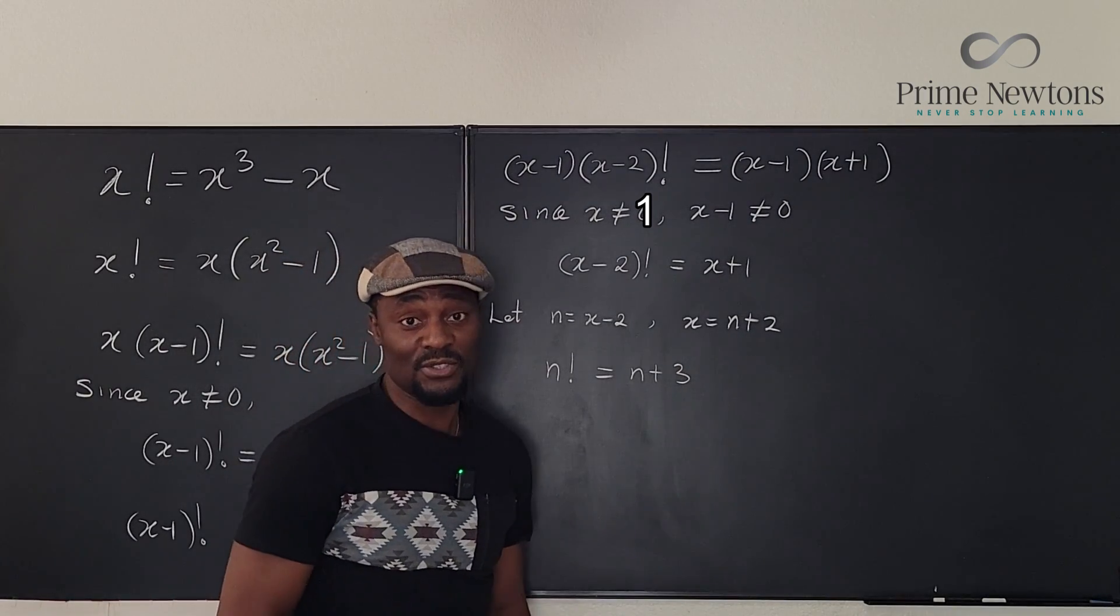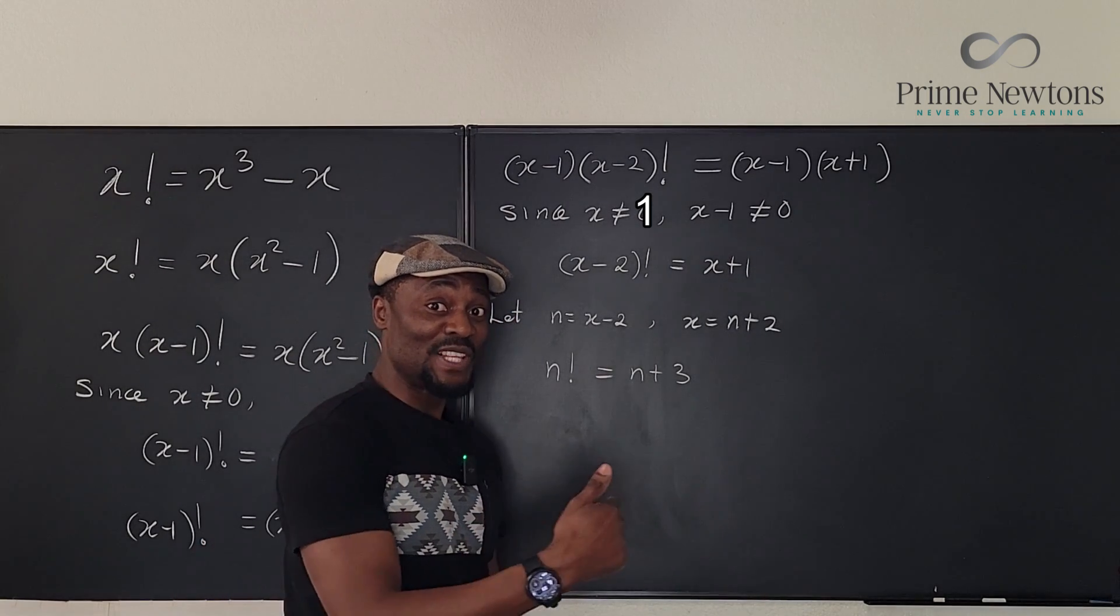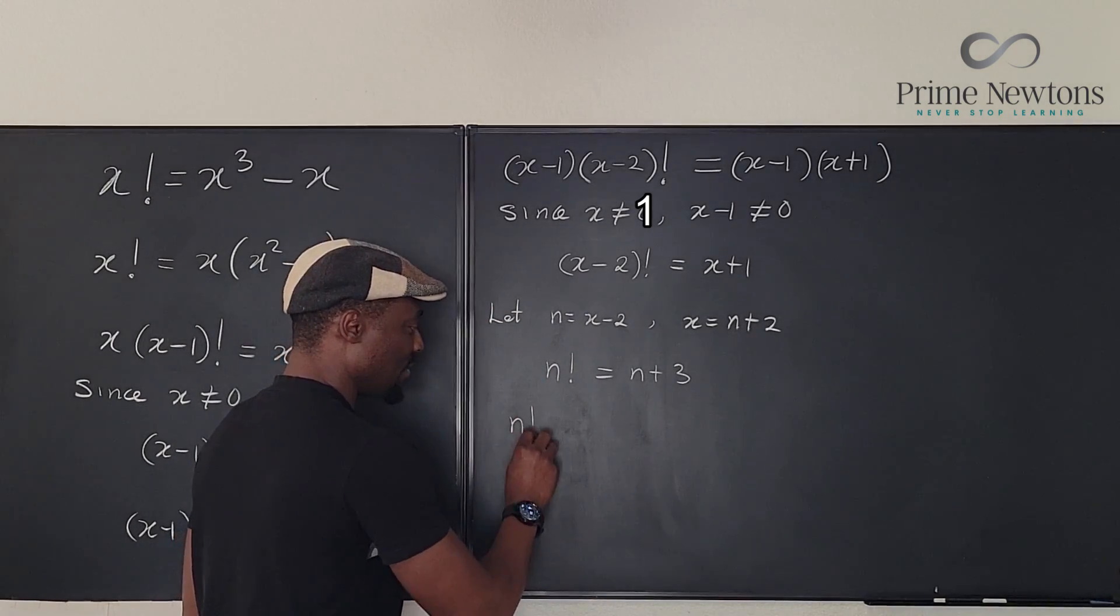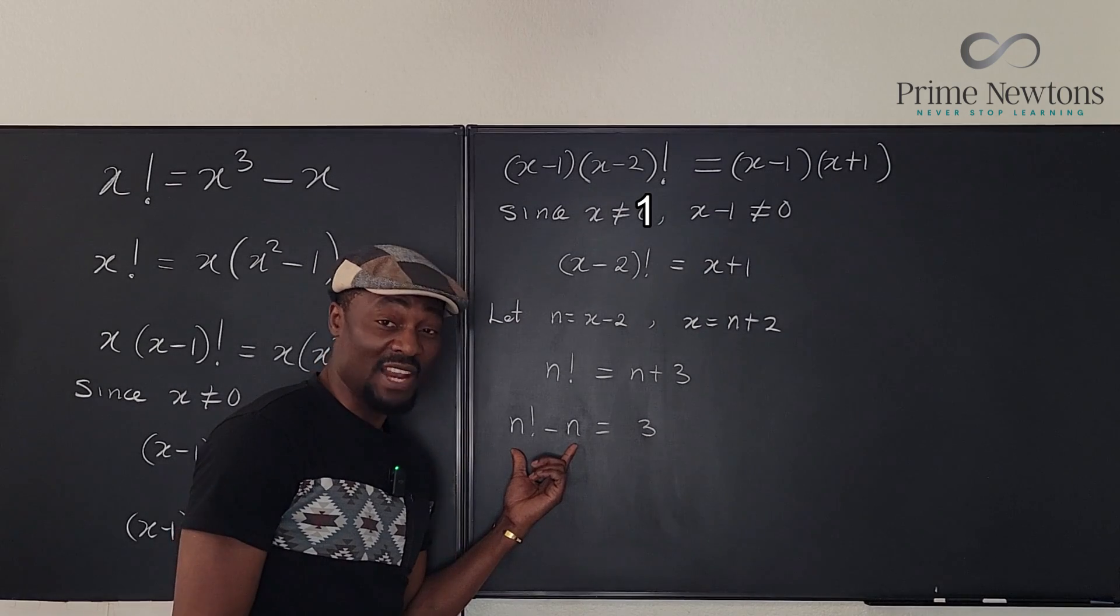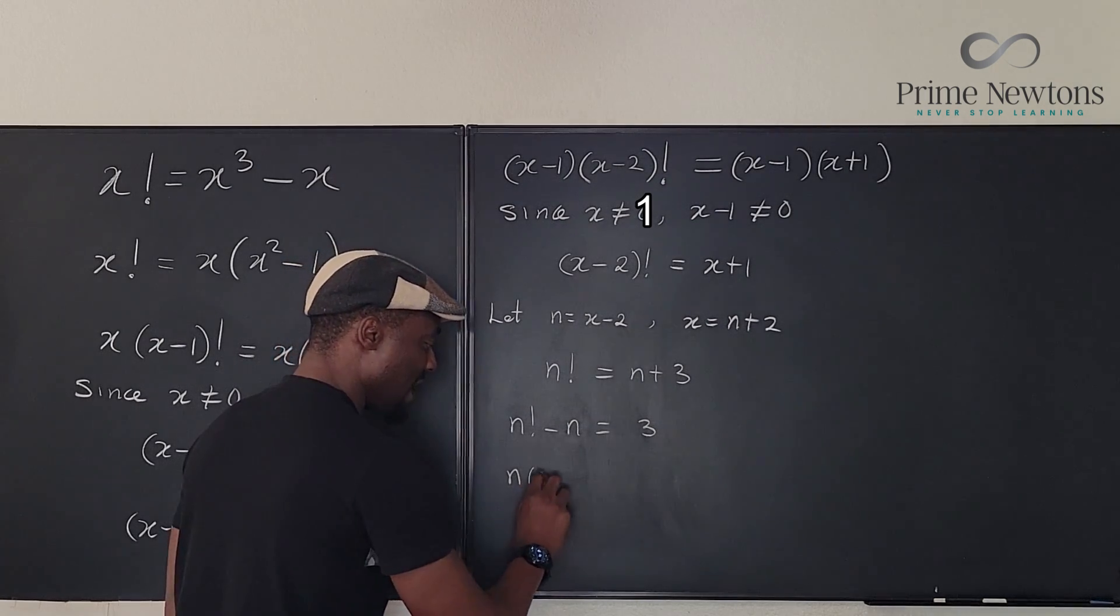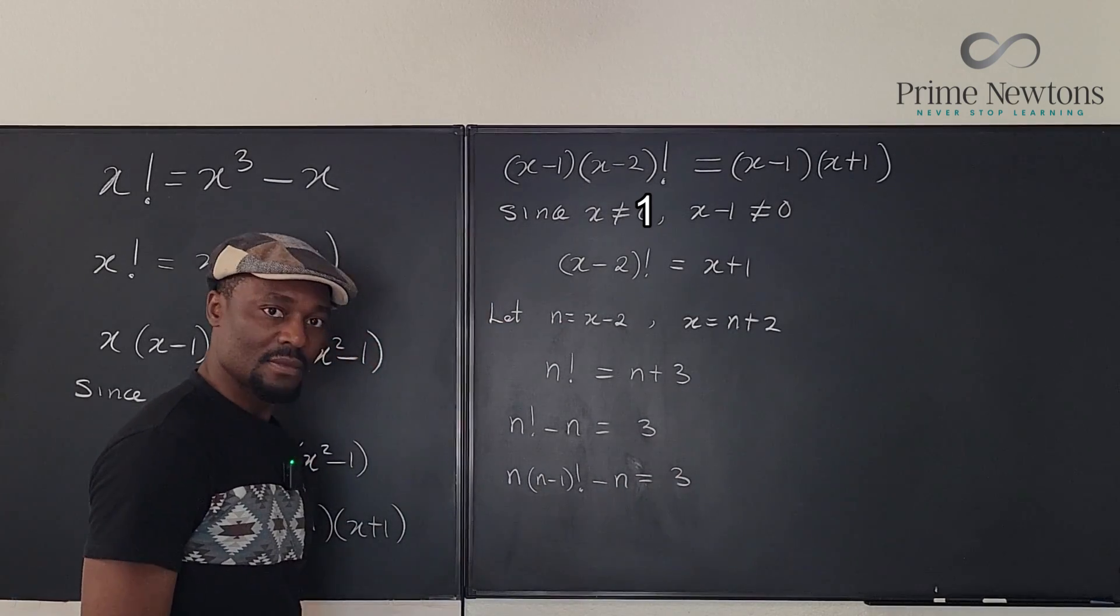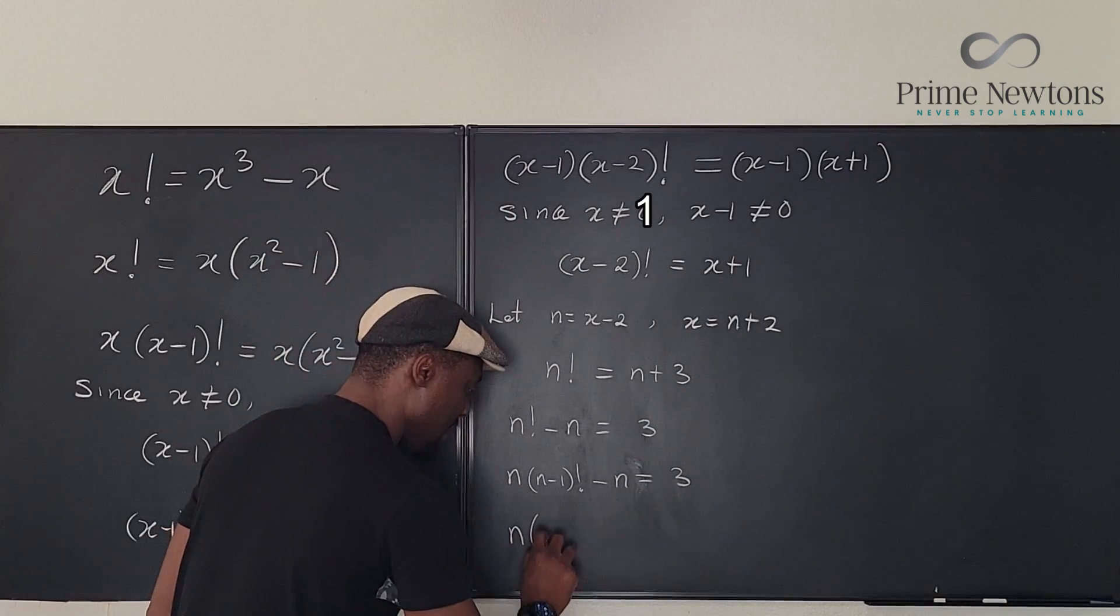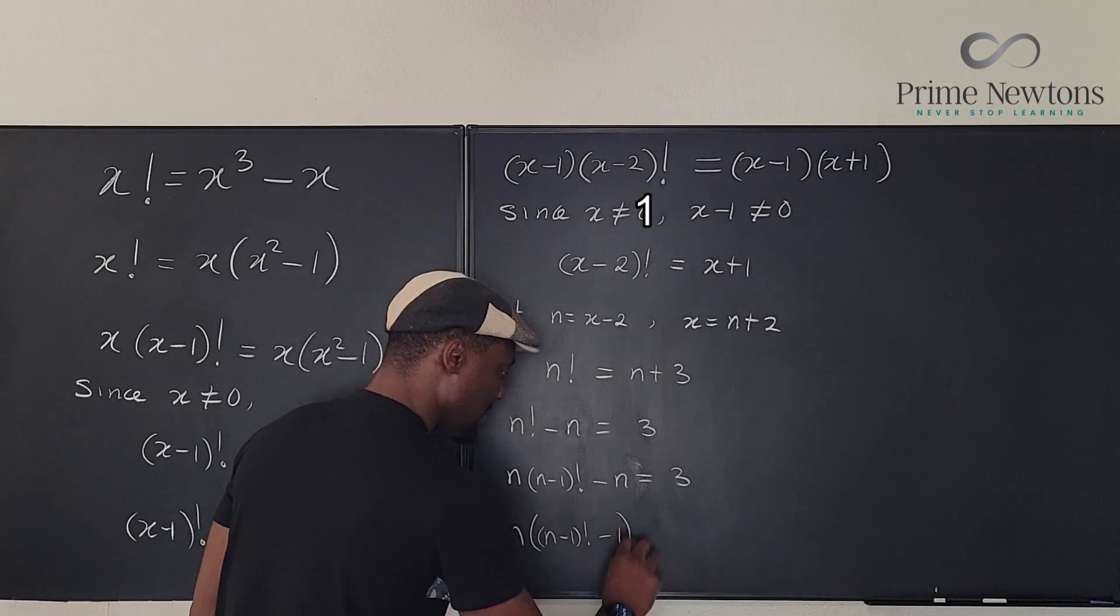But I had an idea after the video and someone commented it and I agreed. So I'm going to use that idea in this case, look at this. This is n factorial. I'm going to move this n over here. n factorial minus n is equal to 3. All I need is to write this as a product and life is going to be beautiful. Watch this. What if I write n factorial as n times n minus 1 factorial minus n is equal to 3. I just rewrote this to be like this. Now I can factor out n for both of them. So I have n into n minus 1 factorial minus 1 is equal to 3.